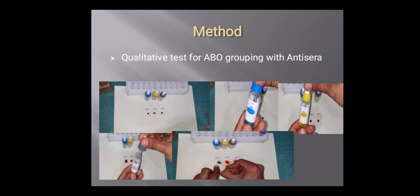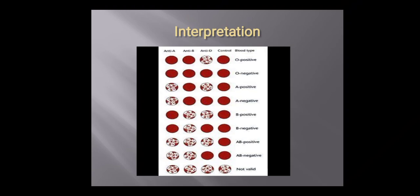For example, in the interpretation, in the third row, there is an agglutination occurring on the first and the third drop, that is on the anti-A and on the anti-D, which corresponds to anti-A and RH factors. This individual is having a blood group of A positive.